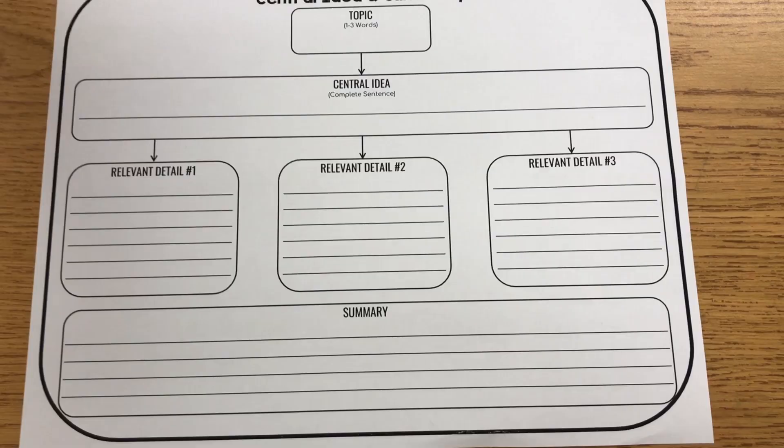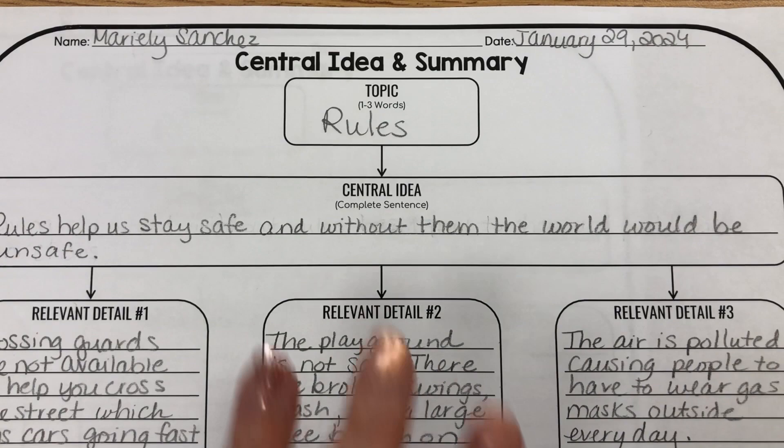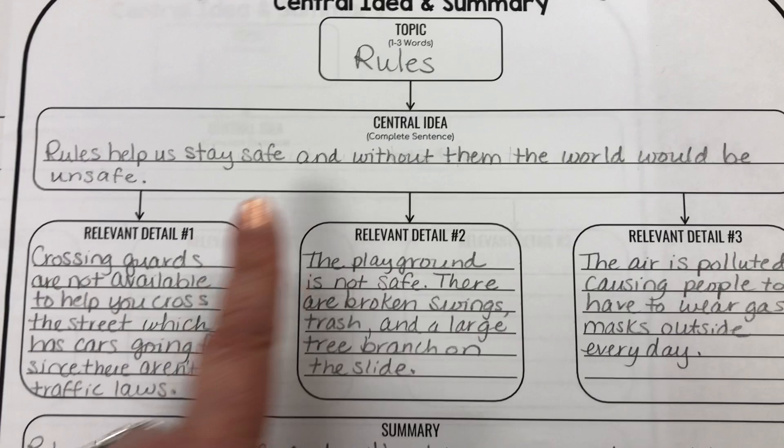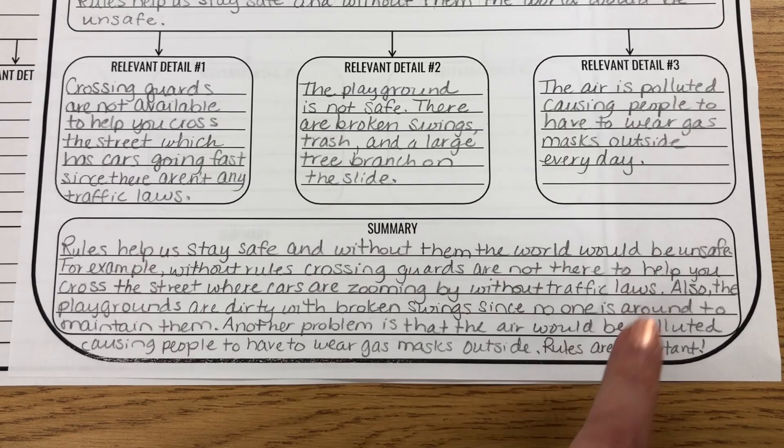This here is the one I created as my example. The topic was 'Rules for a World Without Rules.' I put the central idea, three relevant details in my own words, and then used that to help write the summary.